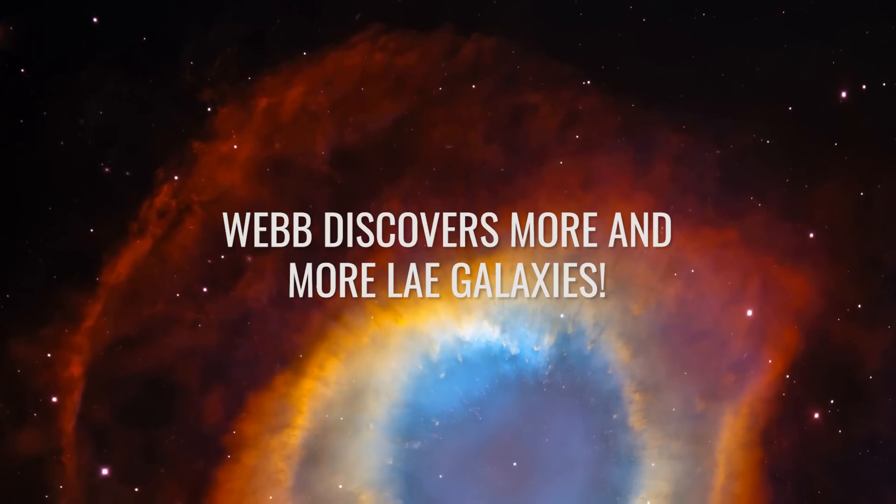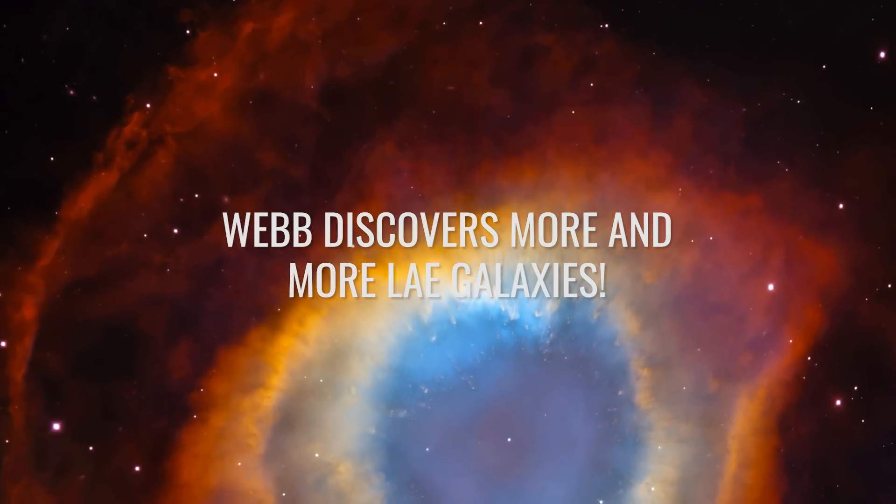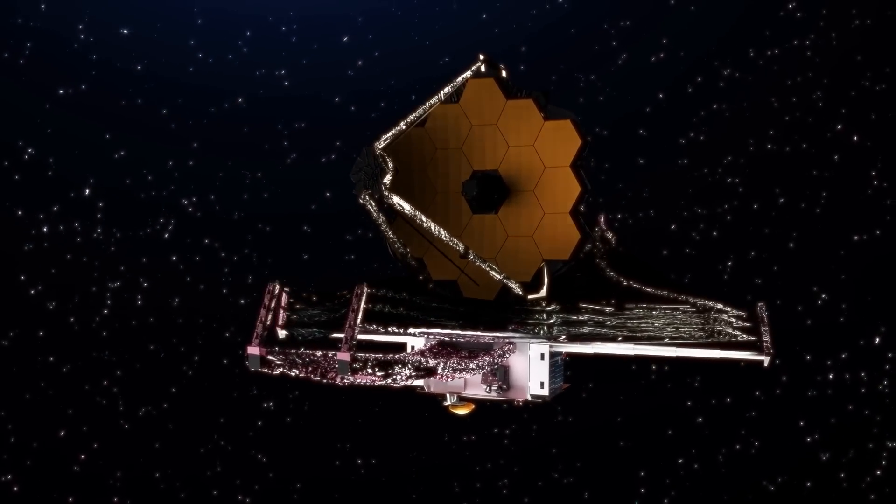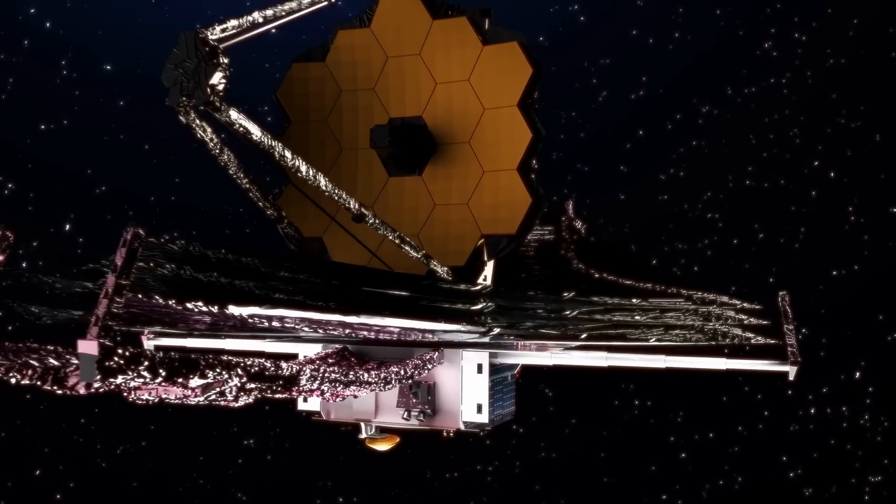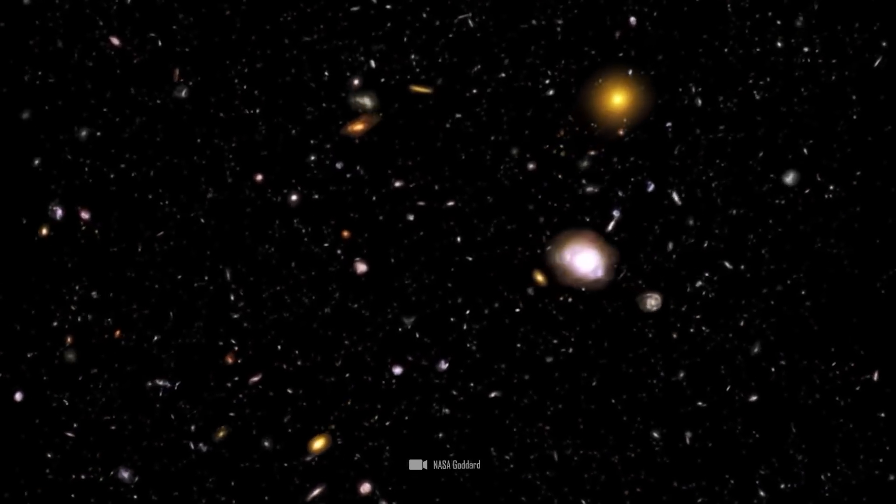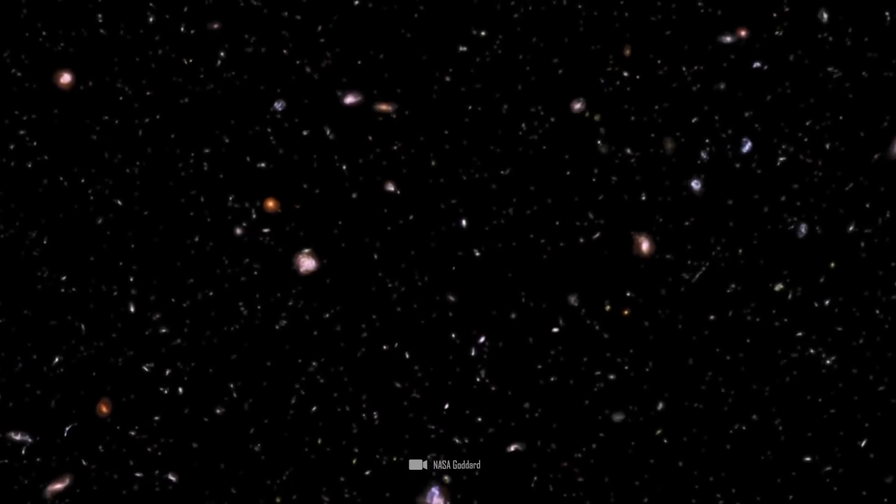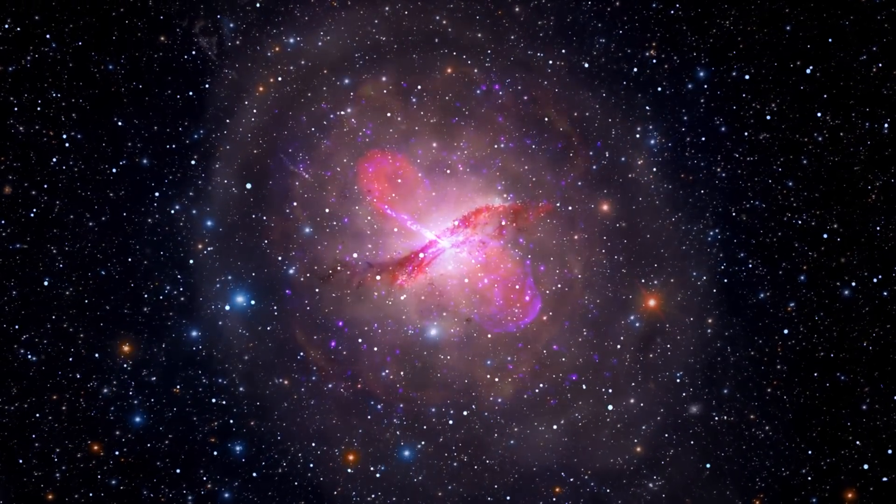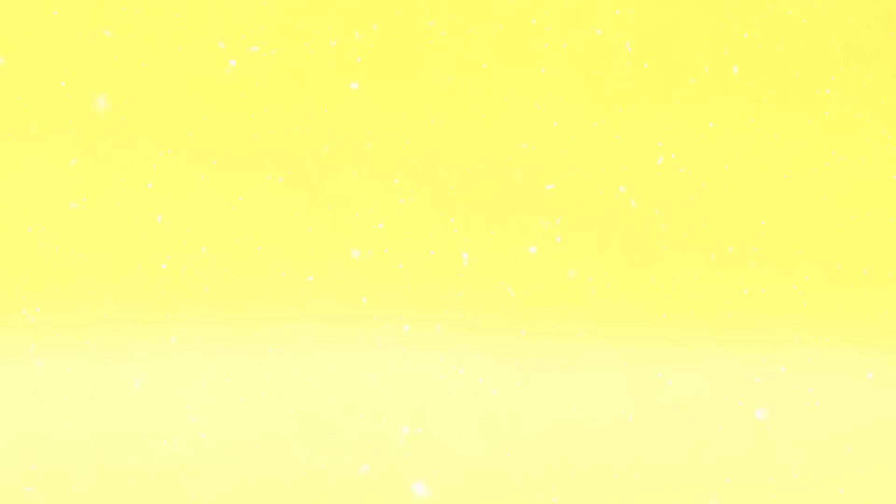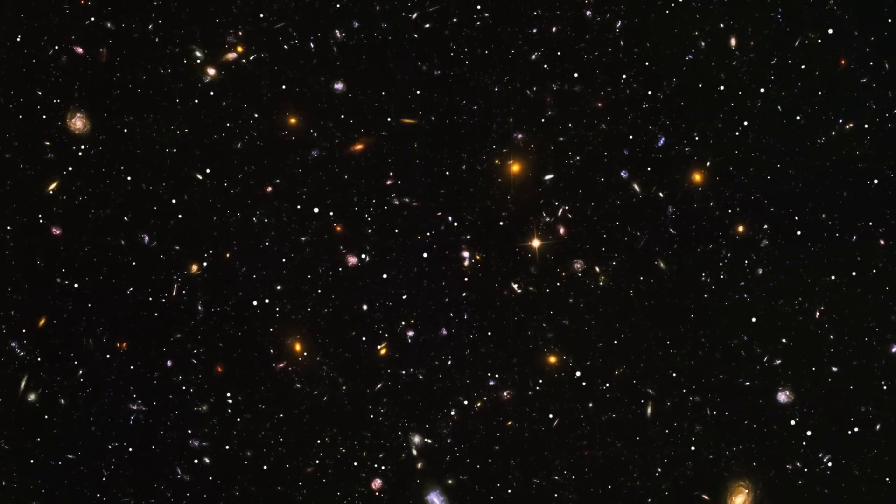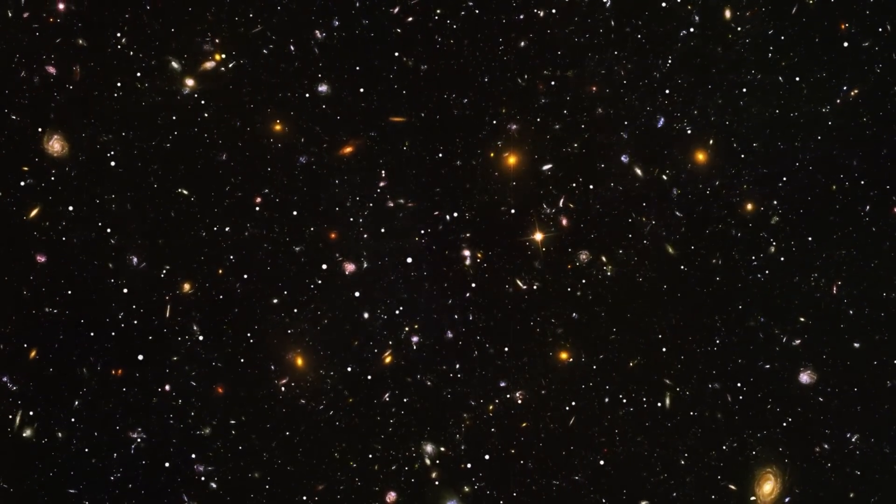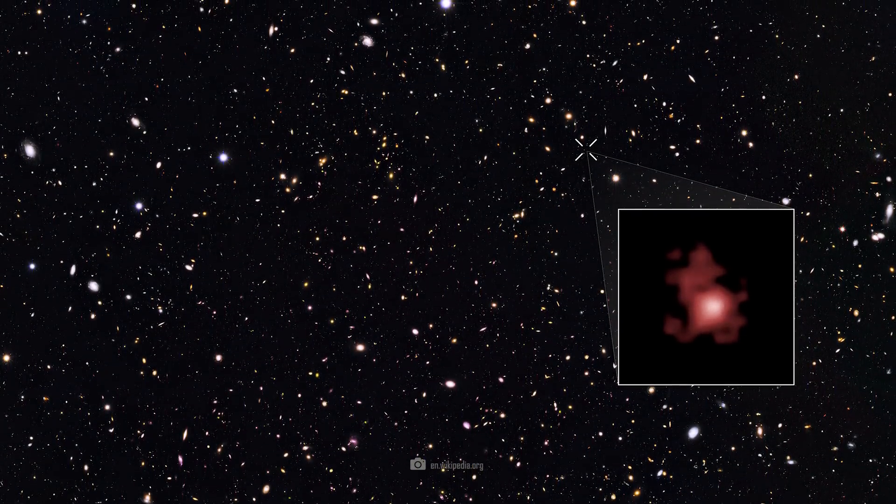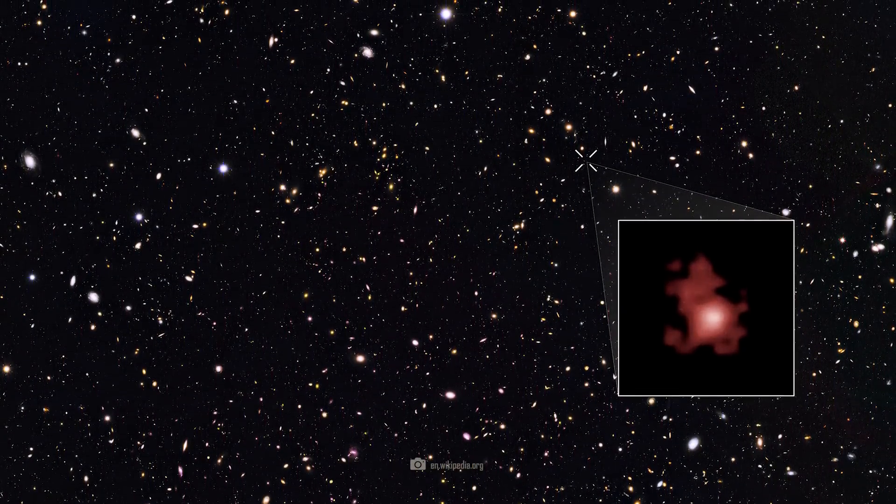The James Webb Space Telescope is looking farther back than any other telescope before it, and it has revealed impressive examples of Lyman Alpha emitters that are now so important to research. One of the most notable of these discoveries is the galaxy GN-Z11, originally identified by the Hubble Space Telescope and later confirmed by the JWST.